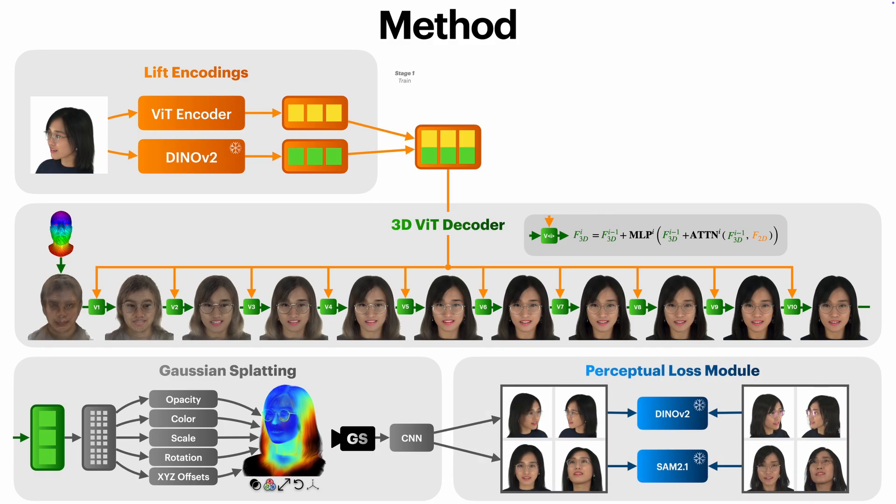Our model is trained using a novel perceptual supervision strategy. It leverages two foundation vision models: DINOv2 for its generalized visual understanding, and Segment Anything 2.1 for its segmentation-oriented visual understanding. The CNN post-processing module is trained separately using a combination of DINOv2 features, LPIPS, and an L1 loss.